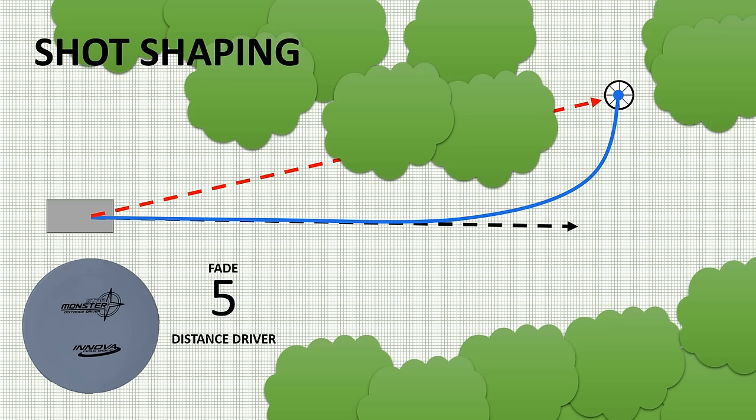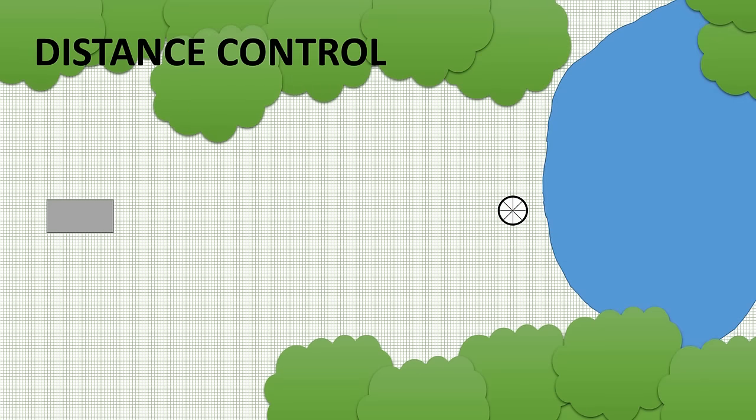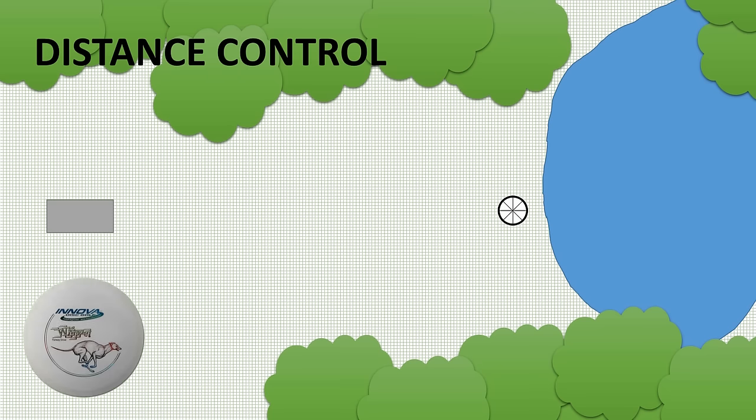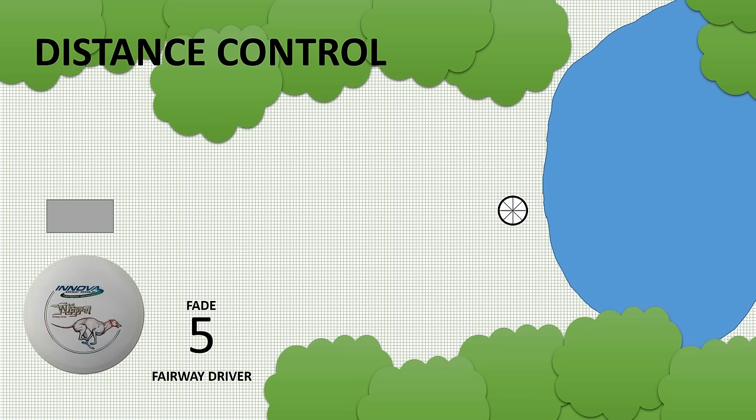The second and much less commonly thought of reason for using high fade is distance control. Let's say you have a relatively short hole or a water hazard behind the basket. In any scenario where controlling the distance precisely is more important than maximum distance, using a high fade disc, for example the Whippet, a fairway driver with a very high fade, is going to provide you with a very predictable, consistent fade at the end, turning forward motion into lateral motion, and allowing you to throw with more confidence, more closely to the water, and getting closer to the basket without fear.